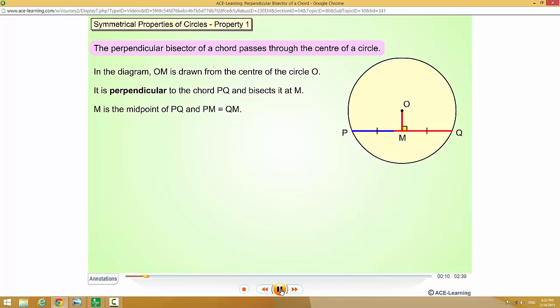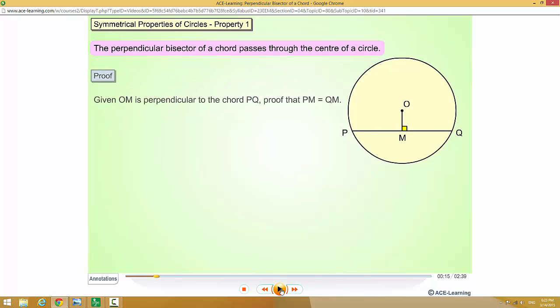It is a perpendicular bisector, which means that PM is equal to MQ. And that is the property of the perpendicular bisector of a chord passes through the center of a circle.